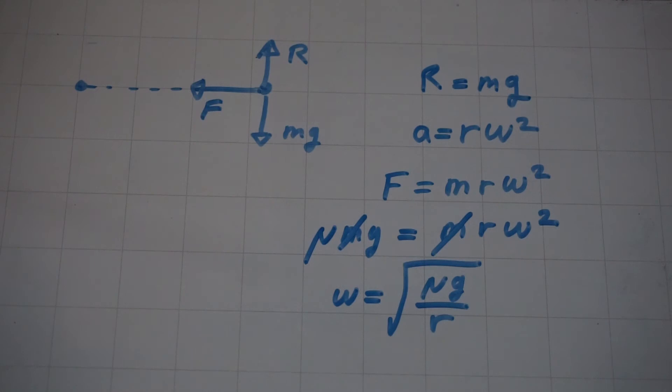Also if we decrease R, which would be the case for coins nearer to the centre of the circle, then the value of omega will increase. This explains why the coins near the centre of the circle slip last.